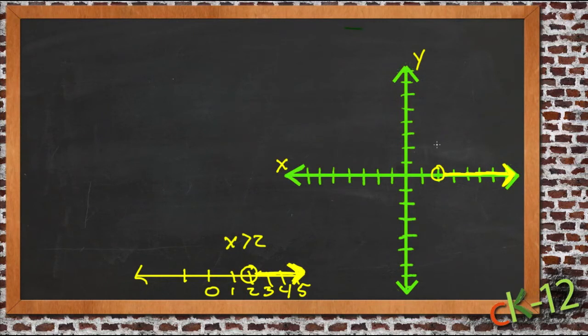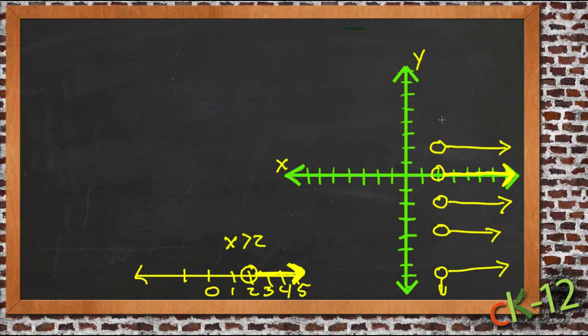Since we aren't specifying what y can be on this graph here, we could also graph this same line right here and be just as accurate because we're only talking about what x can be. We could graph it down here and be just as accurate. In fact, we could graph it anywhere we wanted vertically, all the way down there as far down as we wanted to go and all the way up as far as we wanted to go, as long as the x coordinate of whatever point we were graphing was greater than two.